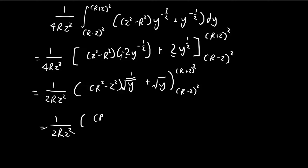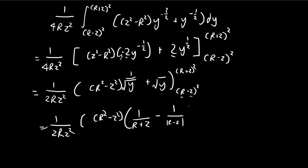Substituting the bounds in: for the upper bound r plus z squared, 1 over the square root of y gives 1 over r plus z. For the lower bound, r minus z squared gives the square root of r minus z squared. Whether r minus z is positive or negative depends on z, but since we've squared it and then taken the square root, it's always positive — so we're left with the absolute value of r minus z. Similarly for the other term, we get r plus z minus the absolute value of r minus z.